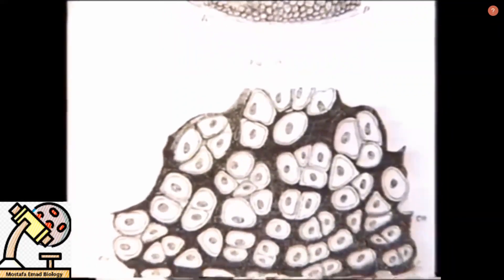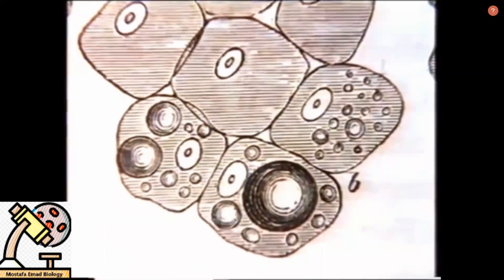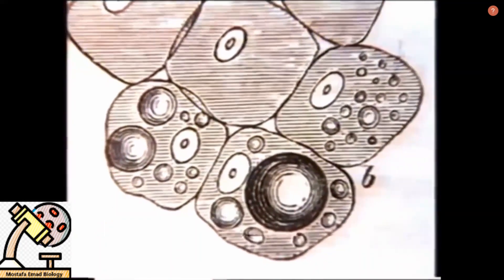Together, the work of Schleiden, Schwann and Virchow gave form to what we now call the cell theory, the basis of modern biology.